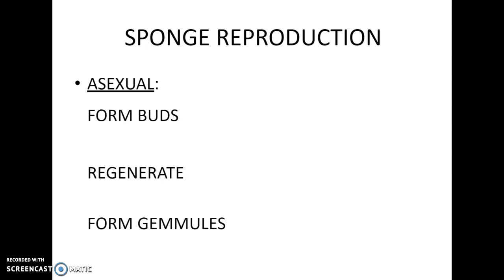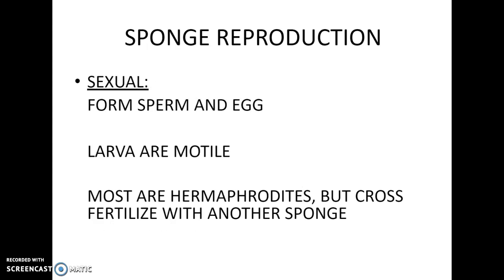Number seventeen: individual sponge cells can actually regrow a sponge through regeneration. Sponges also form special dormant stages called gemmules to survive adverse conditions. So if it's too dry, the temperature is wrong, there's not enough food, or there's severe pollution, they can retreat into these gemmules and come back up quite a bit of time later — maybe even years later.